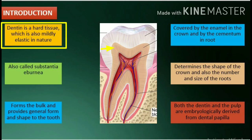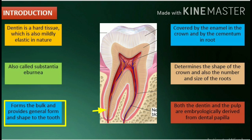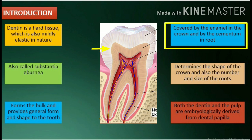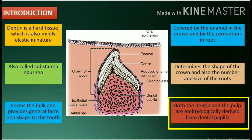Introduction. Dentin is a hard tissue which is also mildly elastic in nature. It is also called substantia ebernia. It forms the bulk and provides general form and shape to the tooth. It is covered by the enamel in the crown and by the cementum in the root. Dentin determines the shape of the crown and also the number and size of the roots. Both the dentin and the pulp are embryologically derived from dental papilla.